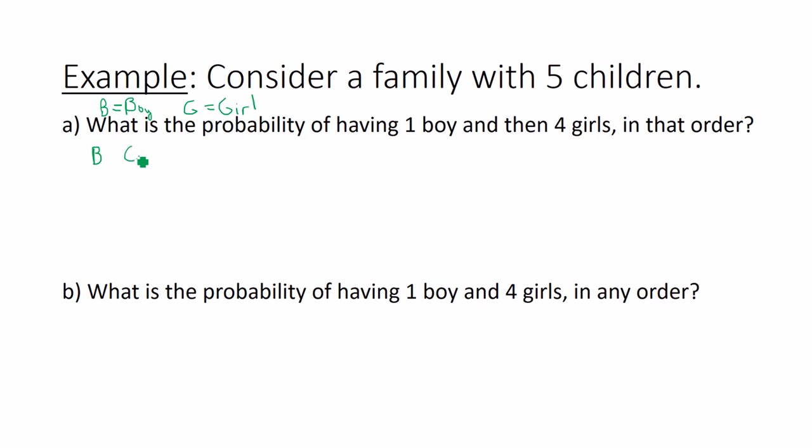So I'm going to calculate the probabilities of each of these trials and multiply them together. The probability of having a boy is one half. The probability of having a girl is one half times one half times one half times one half. Multiply the numerators together to get one. Multiply the denominators together to get thirty-two. So you get one out of thirty-two. That is the probability of having one boy and then four girls exactly in that order.